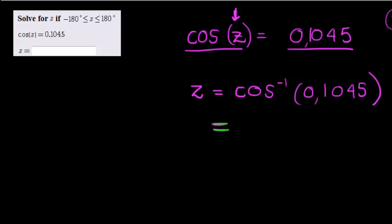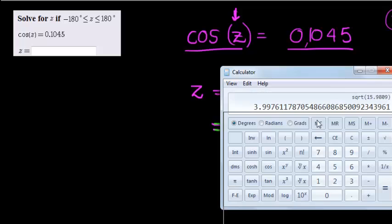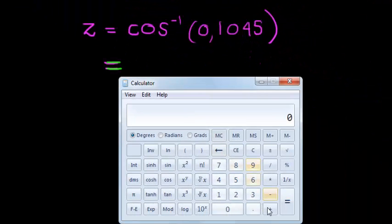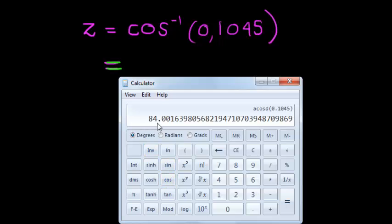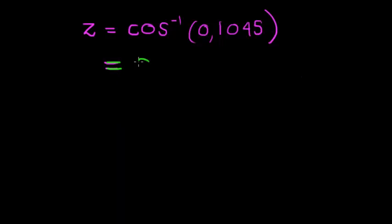So let's work out what is arccos of that value. We have 0.1045, arccos means I take second function of cos, and that gives me 84. If I round it nicely, I get 84 degrees.